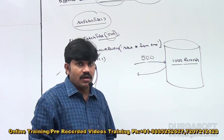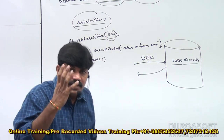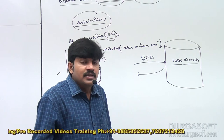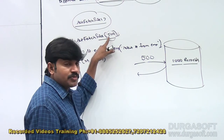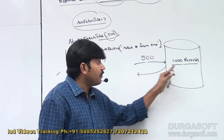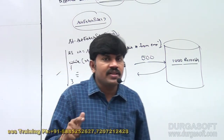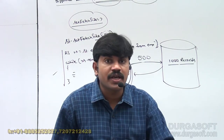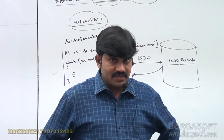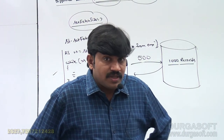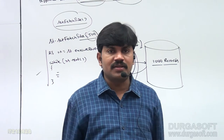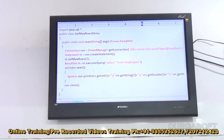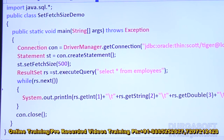The `setFetchSize` method tells how many records should be brought from the database to the Java application at a time. The default value is ten. You can specify one hundred, two hundred, or five hundred as needed. The biggest advantage is that performance is improved because we are reducing the number of network calls to the database. Use `setFetchSize` when handling a huge number of records.